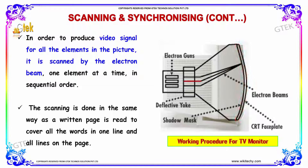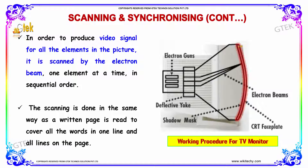In order to produce a video signal for all the elements in the picture, it is scanned by the electron beam, one element at a time in sequential order. The scanning is done in the same way as a written page is read, to cover all the words in one line and all lines on the page.